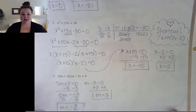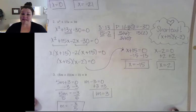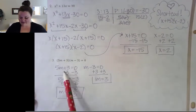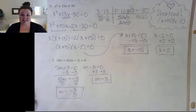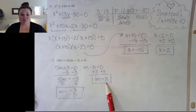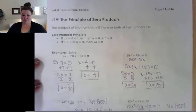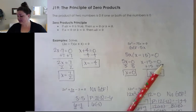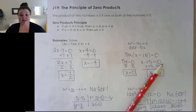The last one should have been the easiest because it's already factored. All you have to do is set each factor equal to 0 and solve. The first gives negative 3 fifths — again, leave it as a reduced fraction, don't turn it into a decimal. The second gives positive 3. That is the end of J19, the principle of zero products. You should now be able to complete that assignment — please let me know if you have any issues.